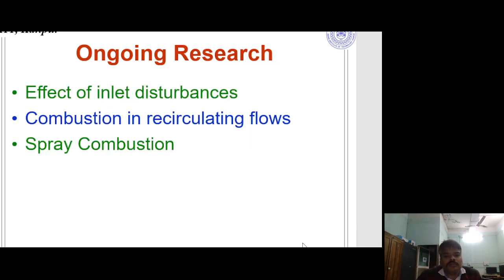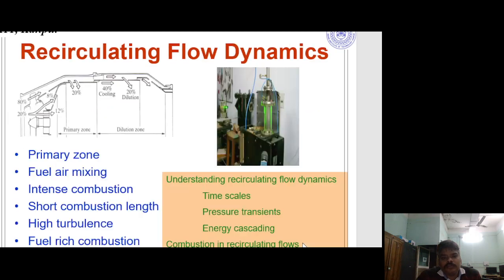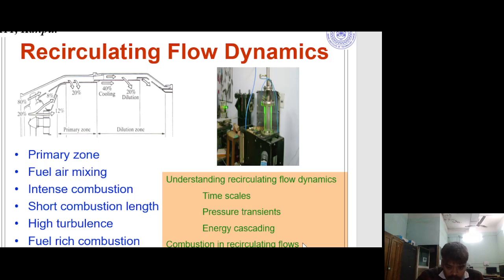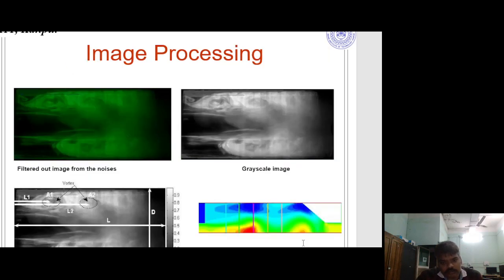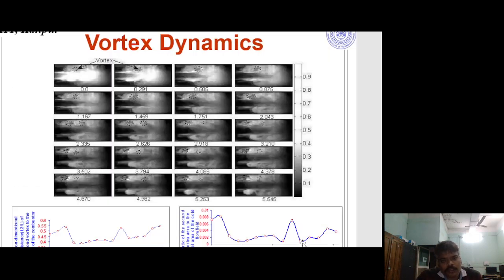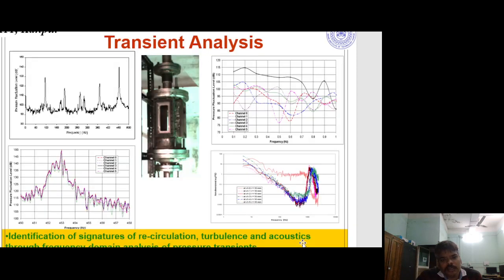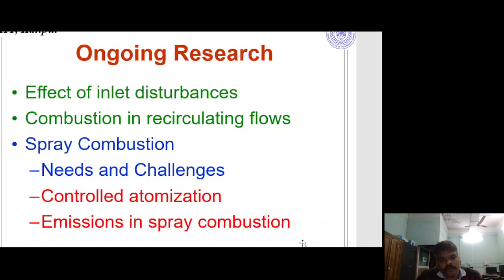Ongoing research — combustion in recirculating flow: Recirculating flow dynamics in the primary zone involve fuel-air mixing, intense combustion, short combustion length, high turbulence, and fuel-rich combustion. Understanding recirculating flow dynamics covers time scale, pressure transients, and energy cascading. Combustion in recirculating flow also examines droplet-flow interaction, image processing, vortex dynamics, and transient analysis.